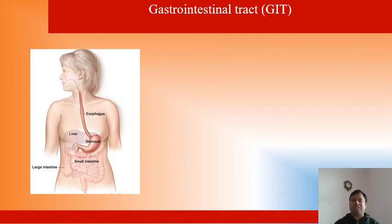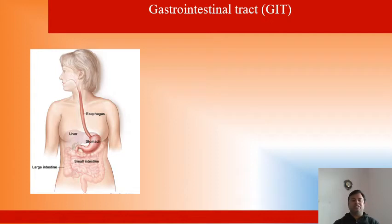This is the gastrointestinal tract. Food comes through the mouth to the esophagus, and through the esophagus it reaches the stomach. Protein digestion occurs in the stomach, then it enters the small intestine, and from the small intestine it goes into the large intestine. Finally, the undigested material comes out from the anus. The liver and pancreas are accessory organs which help in digestion.